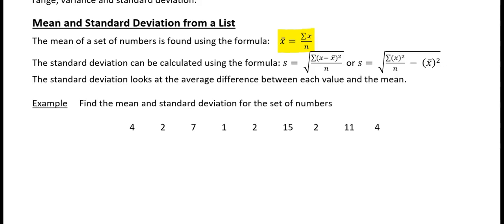The standard deviation can be calculated using a formula. S is equal to the square root of sigma of x minus x bar. So you get your x values, you take the mean away from each x value, then you square that, and then that gets all summed up, then you divide by n.